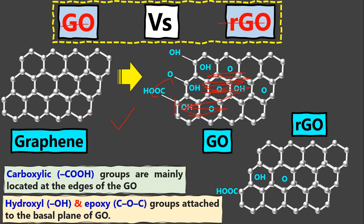When we oxidize the graphite, as explained before, these groups attach to the graphite oxide. Then we exfoliate the graphite oxide to convert it to graphene oxide. So the basic building block of graphene oxide is just like graphene, but with additional functional groups.